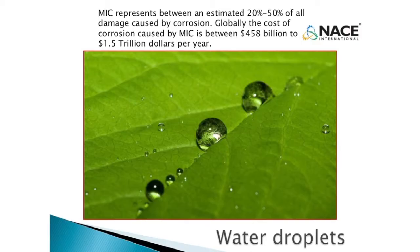MIC, straight out of NACE: MIC represents between 20% and 50% of all damage caused by corrosion, estimated to cost from half a billion to 1.5 trillion dollars per year. Why do we have a leaflet with water droplets if we're talking about pipelines? We're talking about the very minute water droplets — that's all a microbe needs to mix with solids, salts, and compounds to create corrosion cells. Like the very tip of your pen or pencil — that's all a microbe needs.